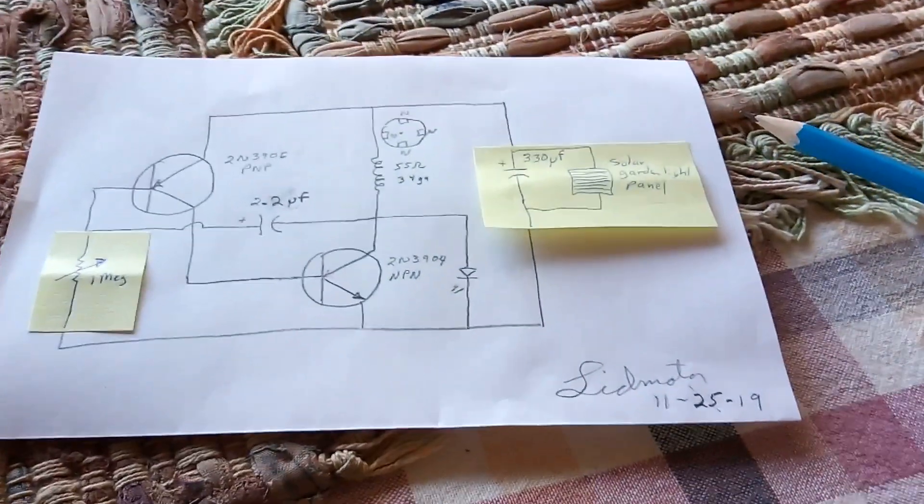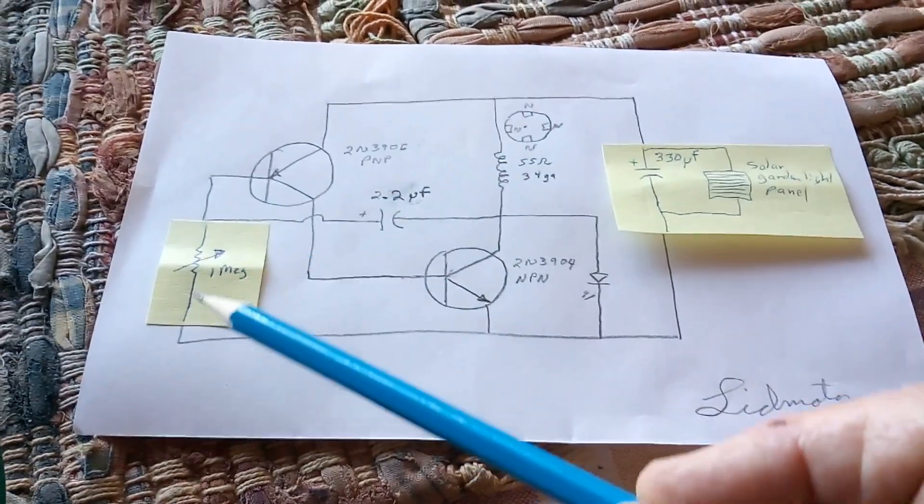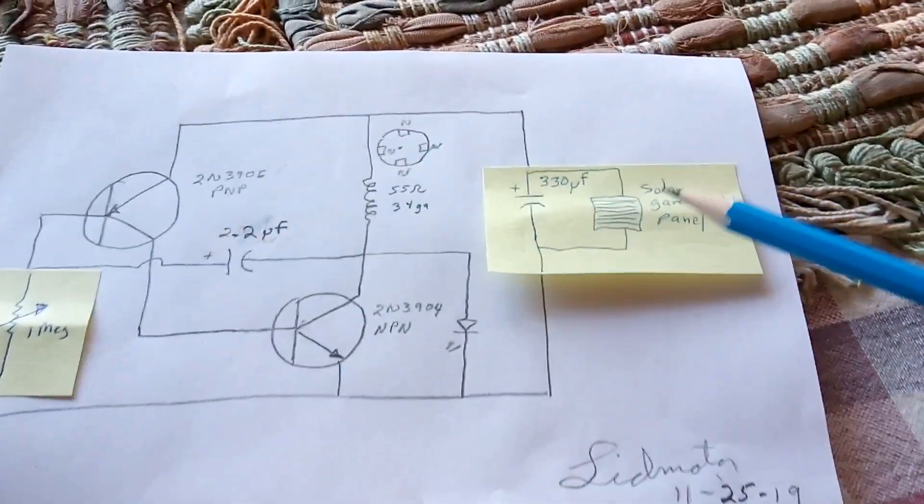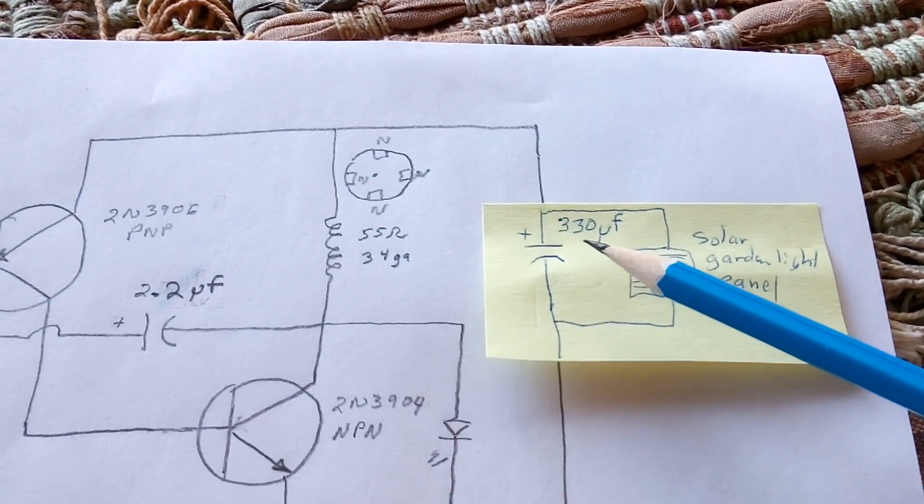This is the modification to the circuit: this is a 1 meg pot instead of the 100k resistor, and then this is the electrolytic cap. It's a 330 microfarad electrolytic capacitor with a solar garden light panel.